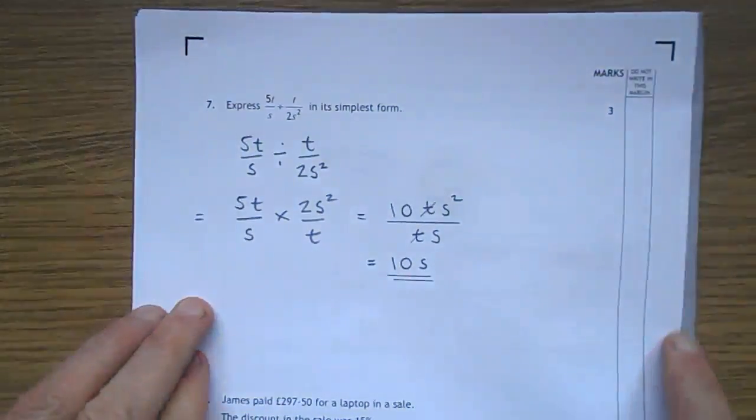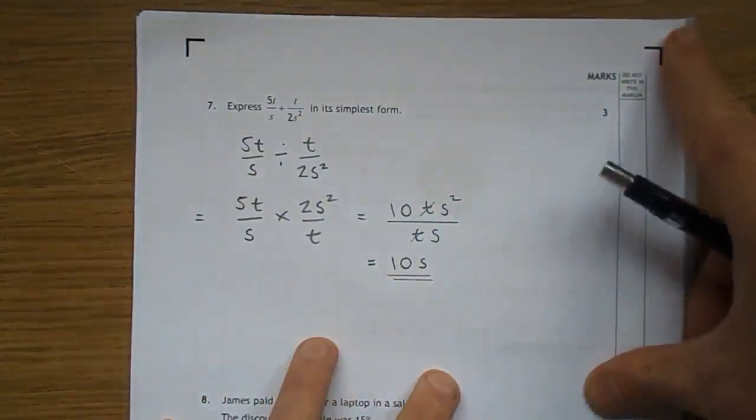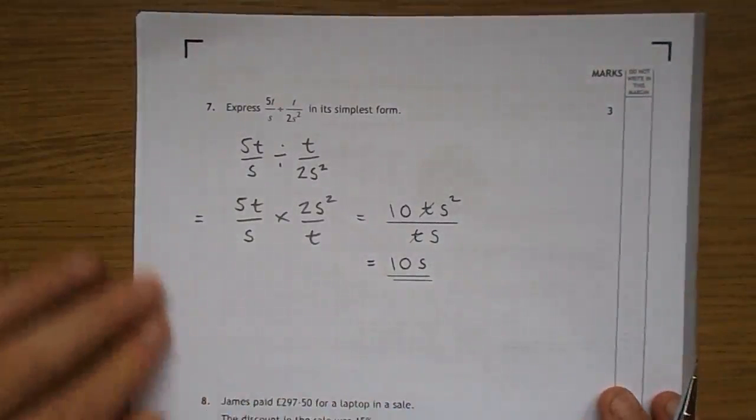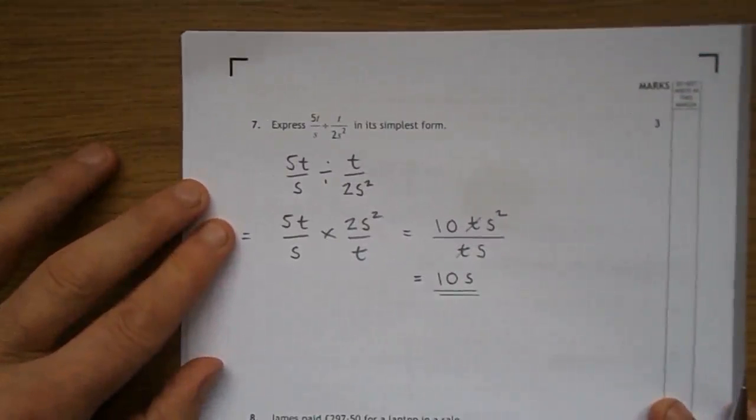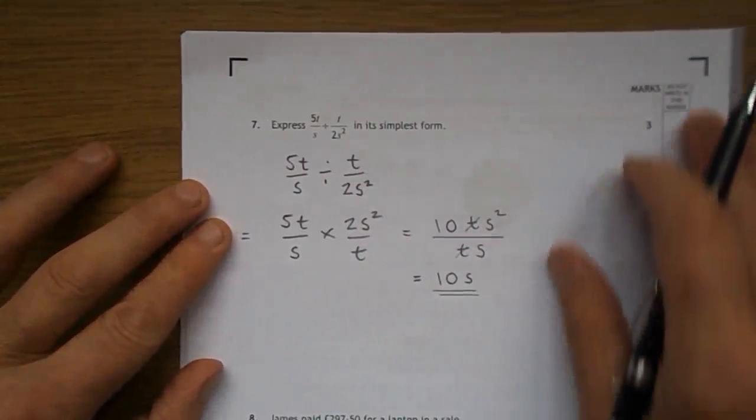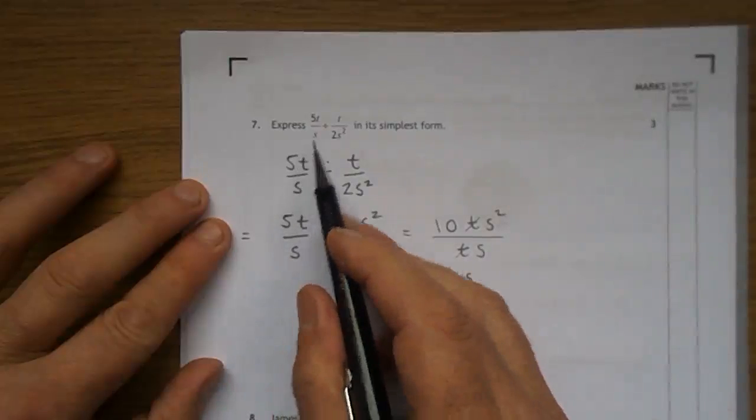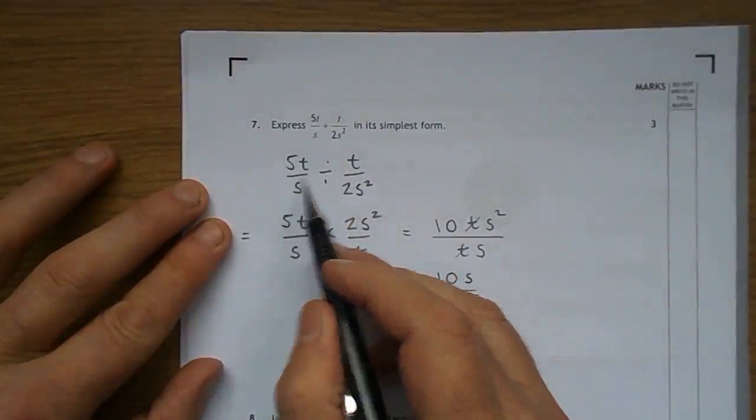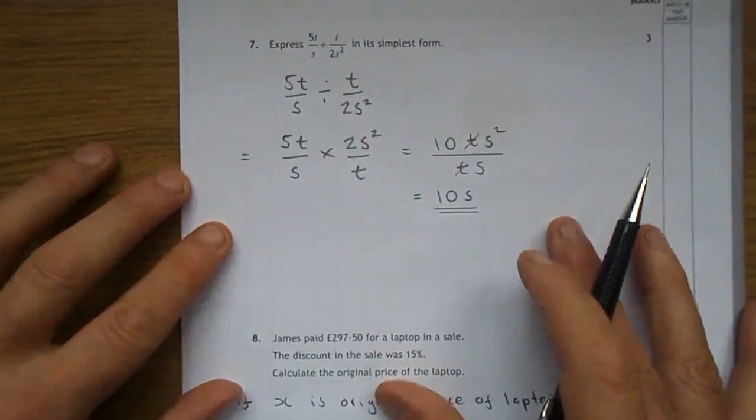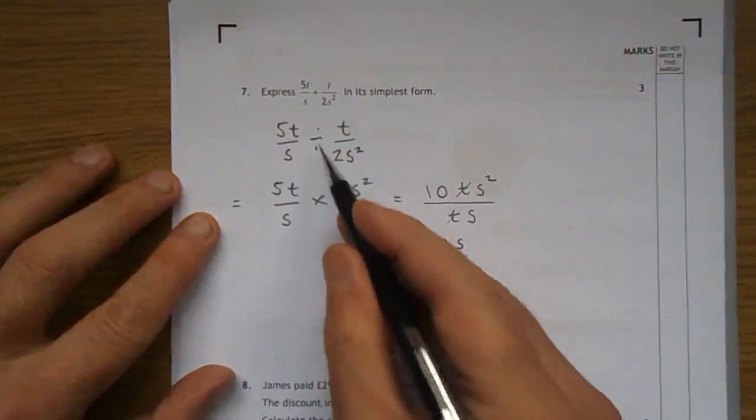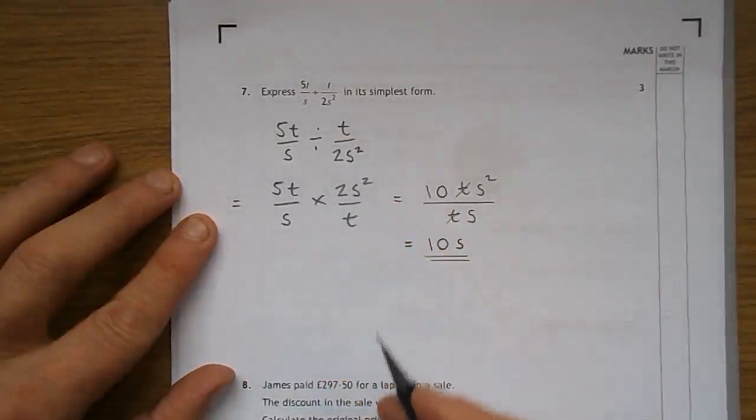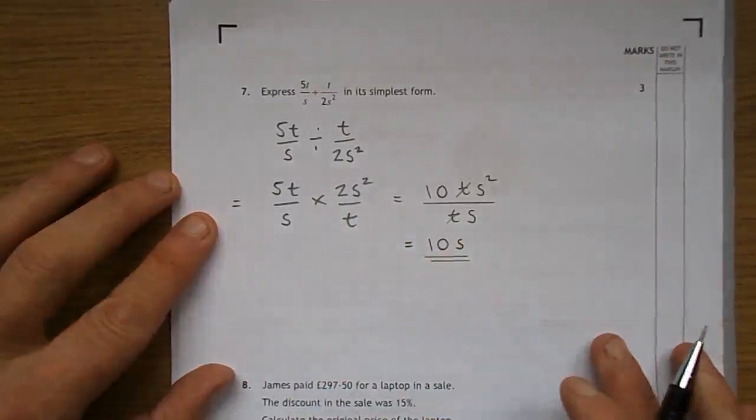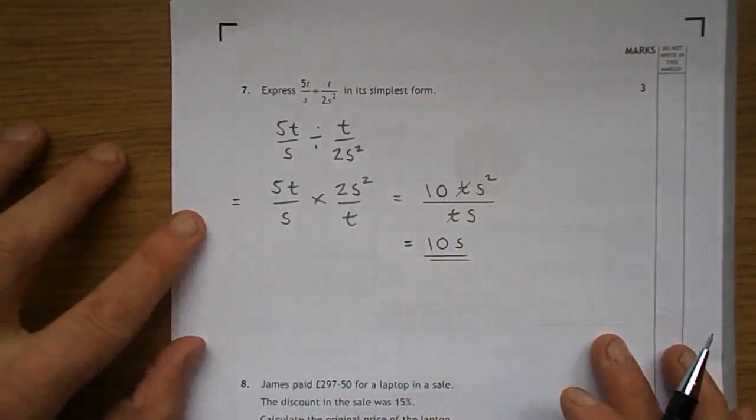Number 7 is the last one I'm doing in this little segment. It's a division using algebraic terms. 5t over s divided by t over 2s squared. But what you do with algebra is exactly what you do with numbers. You would leave that 5t over s, and to work it out, you would change the division to a times, and you would put the second one on its head, turn it upside down. And you get 2s squared over t.